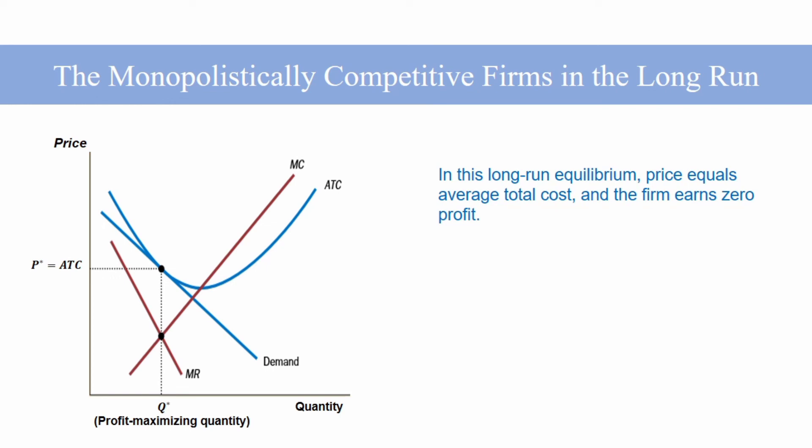The second characteristic shows how monopolistic competition differs from monopoly. Because a monopoly is the sole seller of a product without close substitutes, it can earn positive economic profit even in the long run. By contrast, because there is free entry into a monopolistically competitive market, the economic profit of a firm in this type of market is driven to zero.